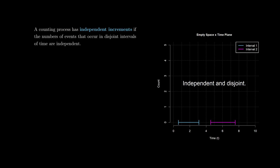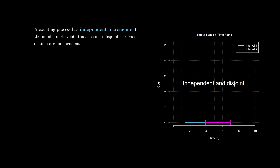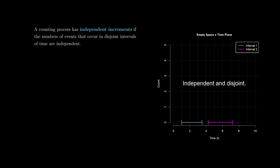A counting process has independent increments if the numbers of events occurring in disjoint intervals of time are independent. So if you have two disjoint — non-overlapping — intervals, the distribution of the counts in those intervals are statistically independent. That's what independent increments means. It's a very important concept that will simplify a lot of the mathematics we'll be doing.